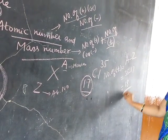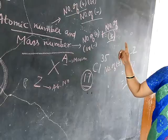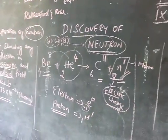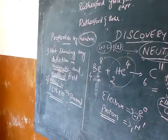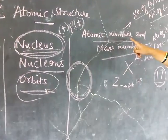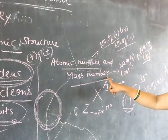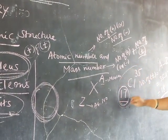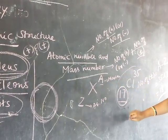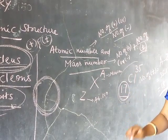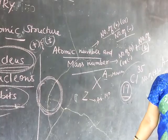This is very important — likewise, even one-mark questions will be asked. So today what are the things we discussed? Discovery of neutron along with its properties, then nucleus, nucleons and orbits, and finally what is meant by atomic number and mass number, and how to calculate the number of protons, electrons, and neutrons. In next class we will see the electronic configuration of atoms. Thank you students.